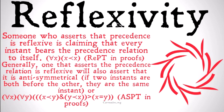Basically, reflexivity is saying that for any instant, we're going to count that instant as before itself. All of the instants that come after it succeed it — they don't precede it. All of the instants that come before it precede it. But where does the instant itself stand? If you think precedence is reflexive, you're saying that instant counts as one of the instants that precedes itself. If you think it's irreflexive, you're saying it does not. Hopefully that makes sense. It doesn't matter that much which one you choose, but you want to stick with one. We're going to stick with irreflexivity unless otherwise stated.